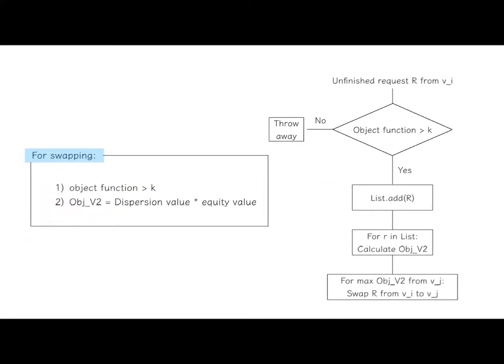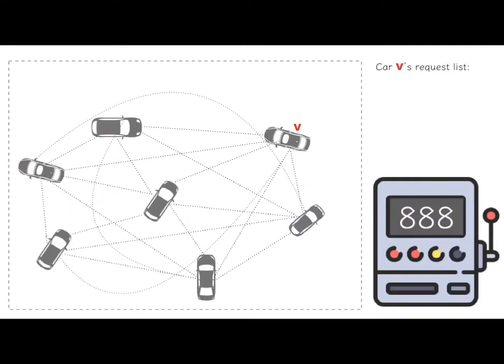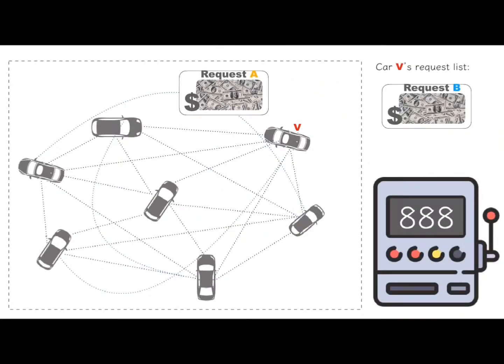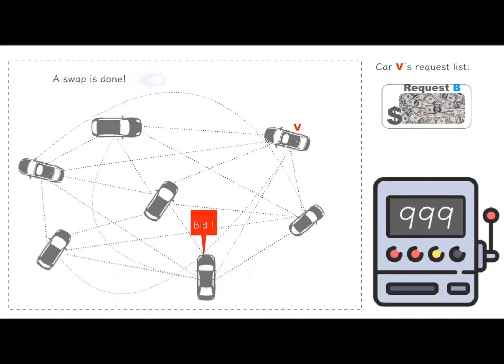In the swapping process, whenever we check a specific unfinished request that was previously assigned to vehicle vi, we will first let all active vehicles bid for it with the value of the objective function. Then with a list of vehicles whose objective function is larger than k, we will calculate objective function v2 for each vehicle in the list at the anticipated time that this specific vehicle is going to finish this request. In the animation, the vehicle that has the largest objective function v2 value is going to get the request, leading to a better outcome.